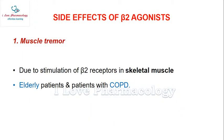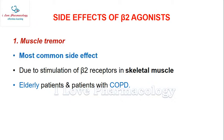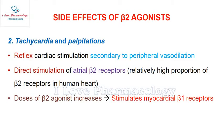Muscle tremor occurs due to stimulation of beta-2 receptors in the skeletal muscle. It is more commonly seen in elderly patients as well as patients with COPD. Importantly, muscle tremor is the most common side effect of beta-2 agonists.